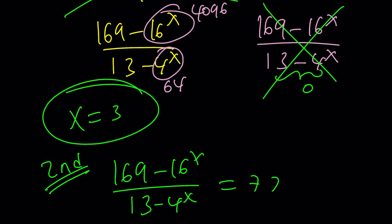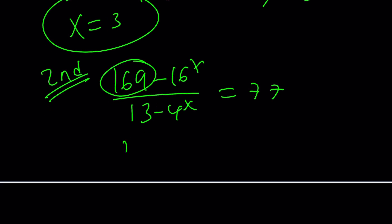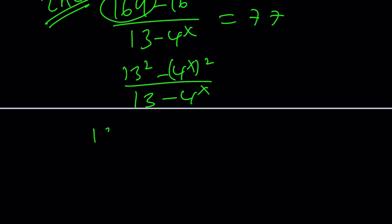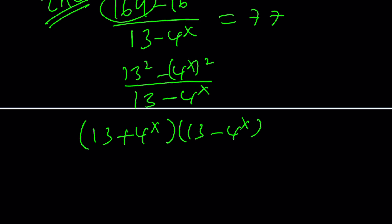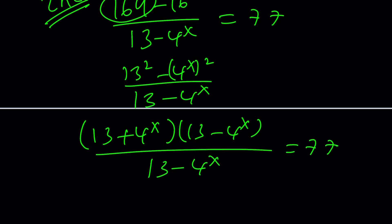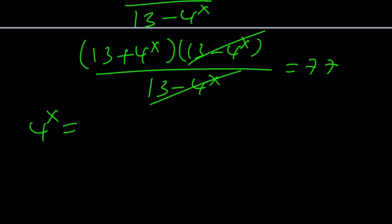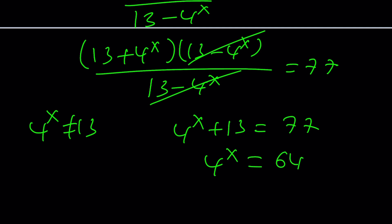Notice that the numerator is a difference of two squares: 169 is 13 squared, and 16 to the power x is (4 to the power x) squared. By using that identity, we can factor the numerator into two factors — (13 minus 4 to the power x)(13 plus 4 to the power x) — which eliminates the denominator. If 4 to the x does not equal 13, we can cancel those out. So 4 to the x plus 13 must equal 77, which means 4 to the power x equals 64, which means x equals 3. Case closed.